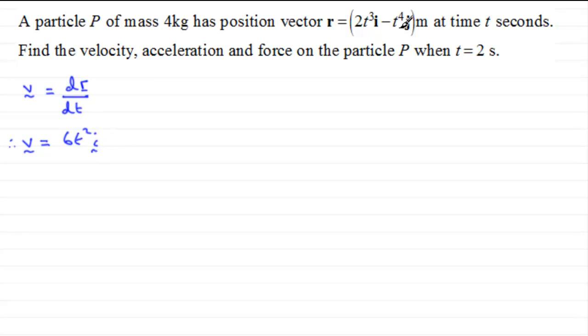And then, for the j component, differentiating that will give us minus 4t to the power 3. Minus 4t cubed in the j direction. And so, that's our velocity vector. Let's put that in brackets and give the units, which would be meters per second.